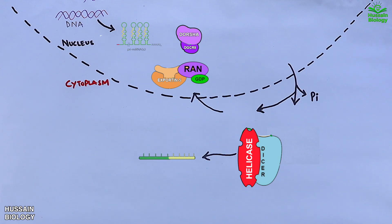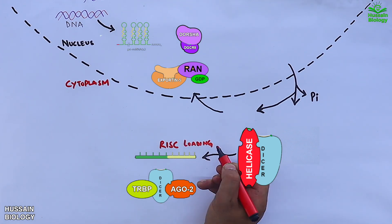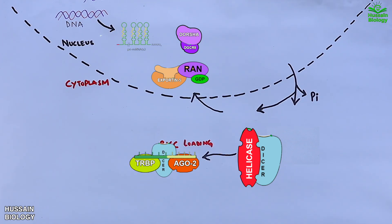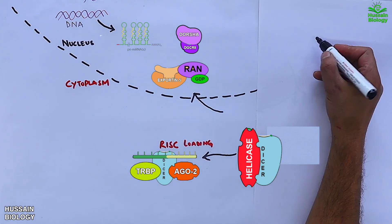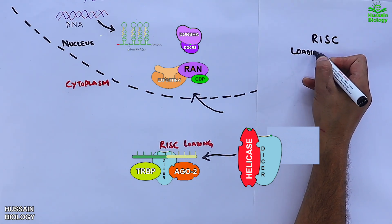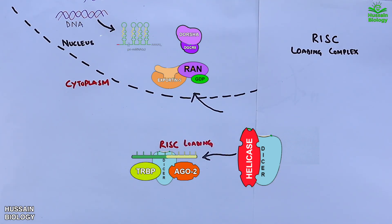Now at the end of this process we have mature miRNA. This mature miRNA is incorporated into protein complexes such as RNA-induced silencing complex, RISC, in a process called RISC loading. This complex then binds the target mRNA.